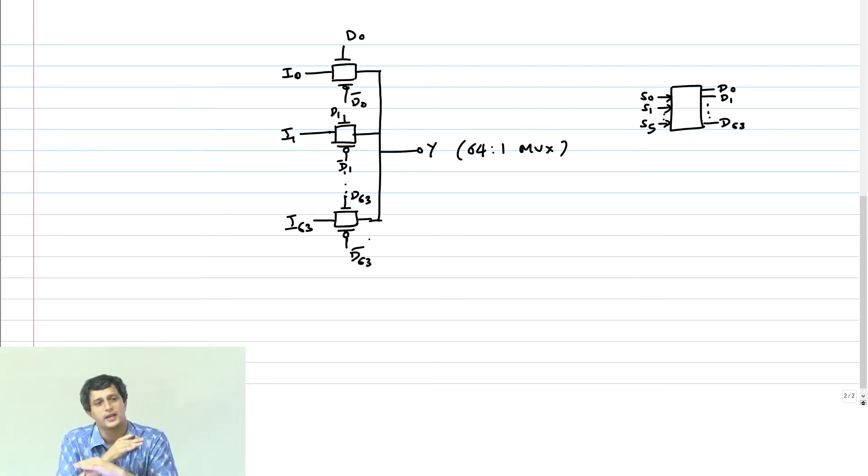So like I told you, this is a case where both true and complement outputs are needed from the decoder. So typically here if you want to do a decoding and then a level translation, then CVSL is a natural choice because it also does level translation for you. Additionally, it also gives you this true and complement output that your multiplexer needs eventually.